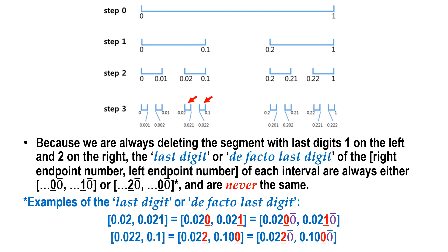Thus, these digits may not strictly be considered as the last digits. However, in subtraction or in other arithmetic, these digits are the ones that matter. Therefore, I call this the de facto last digit.